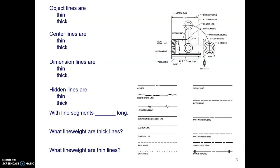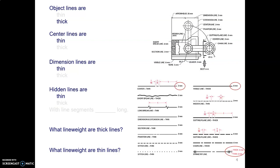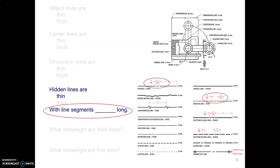What about line weights? Object lines are thick. Center lines are thin. Well, everything is thin. Dimension, hidden lines, those are thin. And thick lines. Oops, sorry. I'll come to that in a minute.